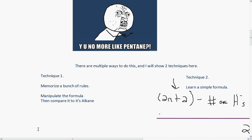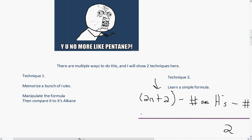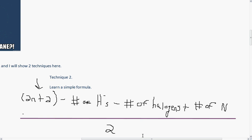Technique one, you'll memorize a bunch of rules, manipulate the formula, then compare it to its alkane. In technique two, you're going to learn a simple formula. 2n plus 2, minus the number of hydrogens minus your halogens plus nitrogen over 2.